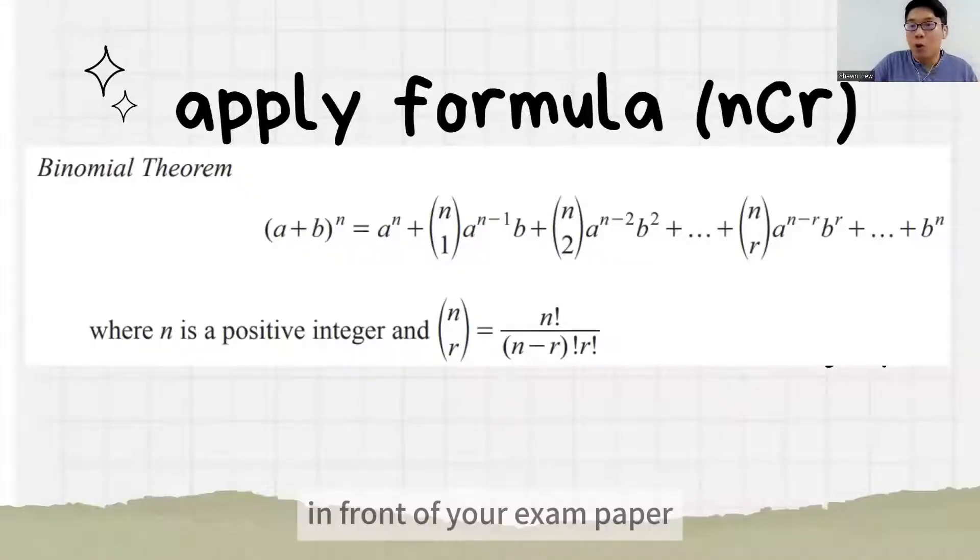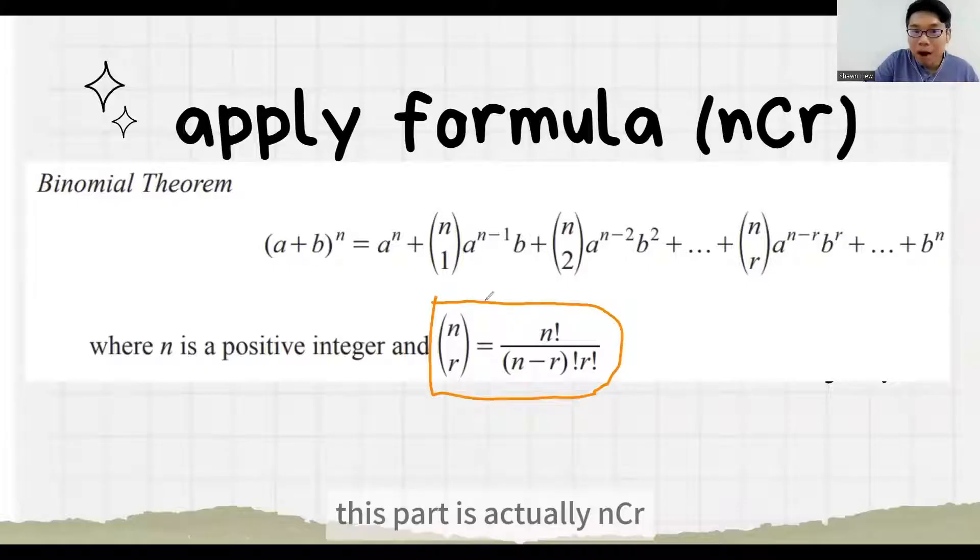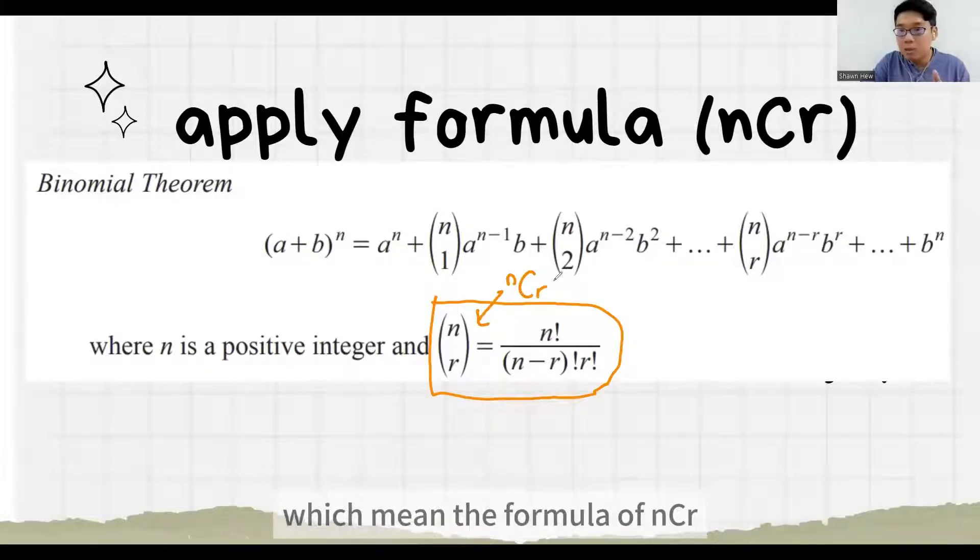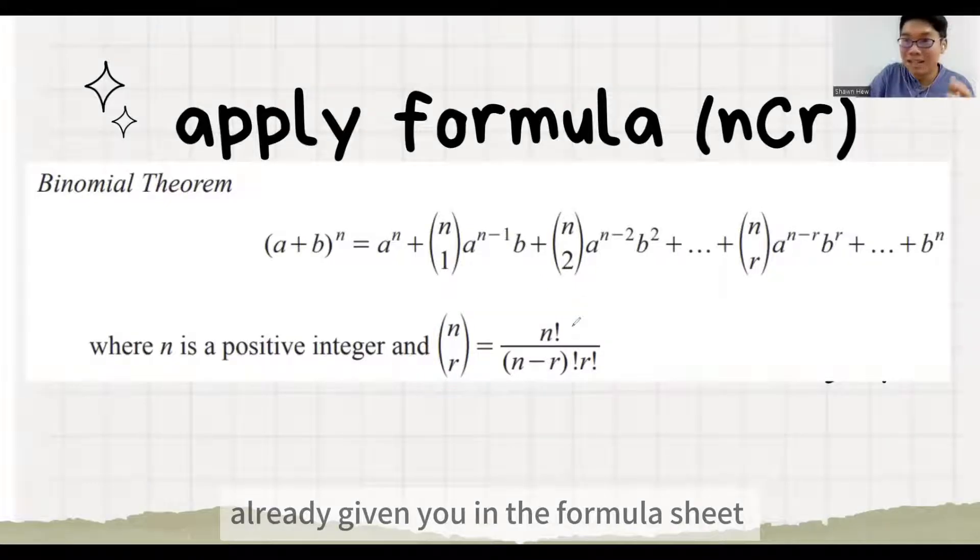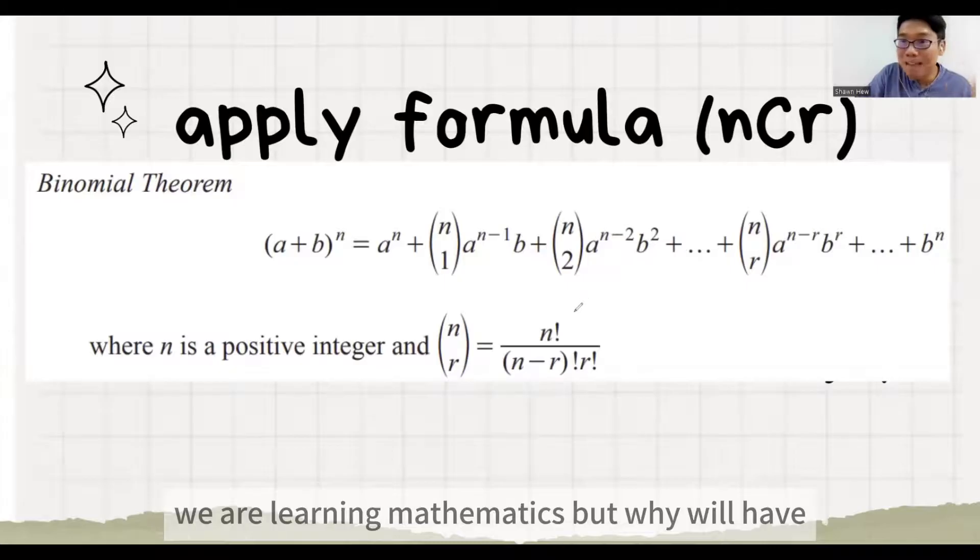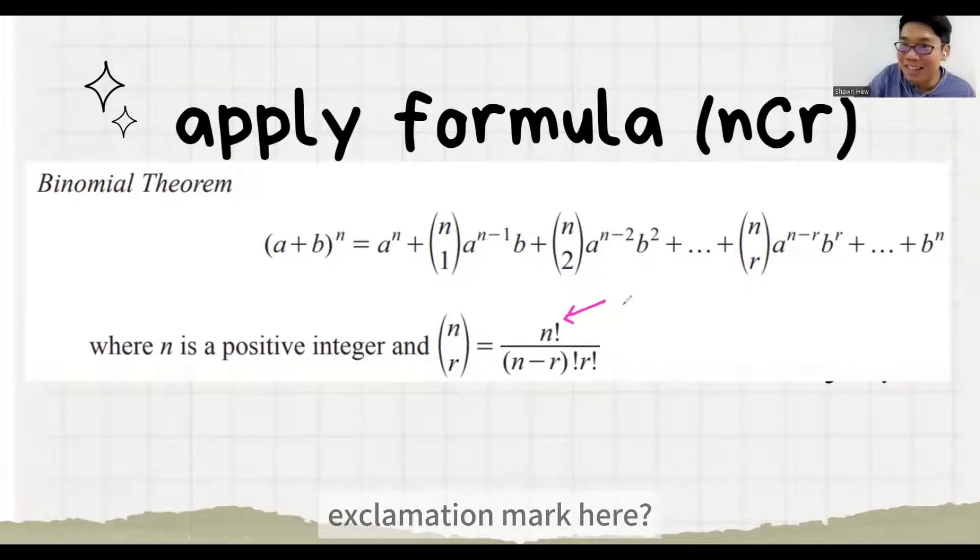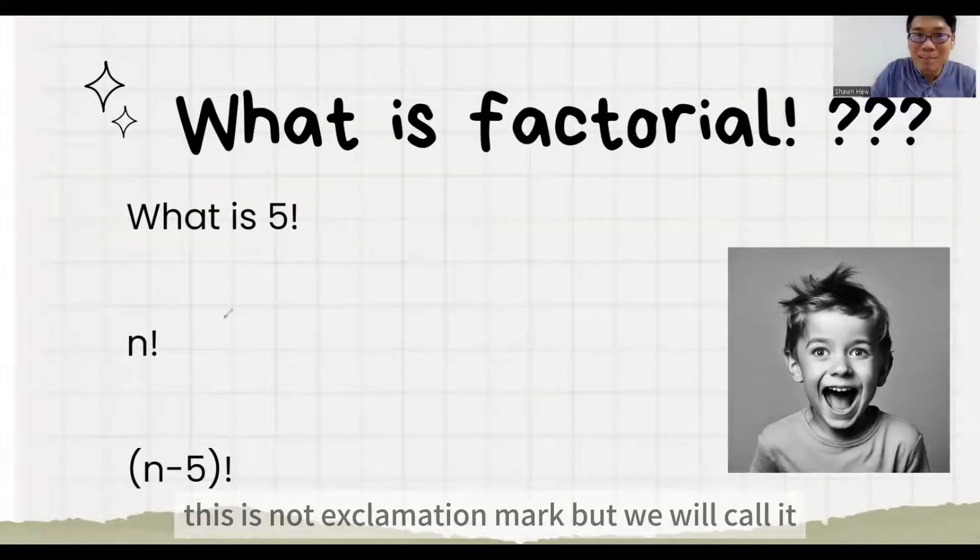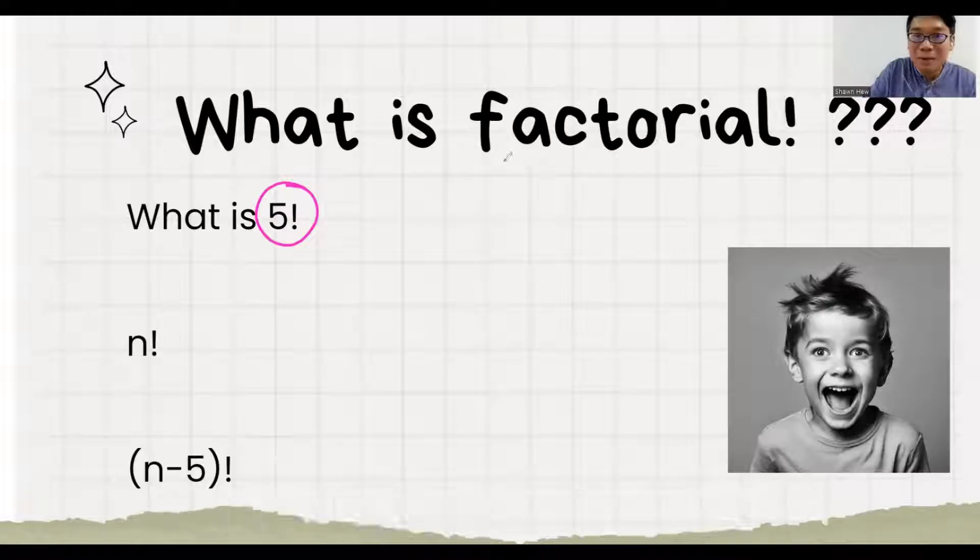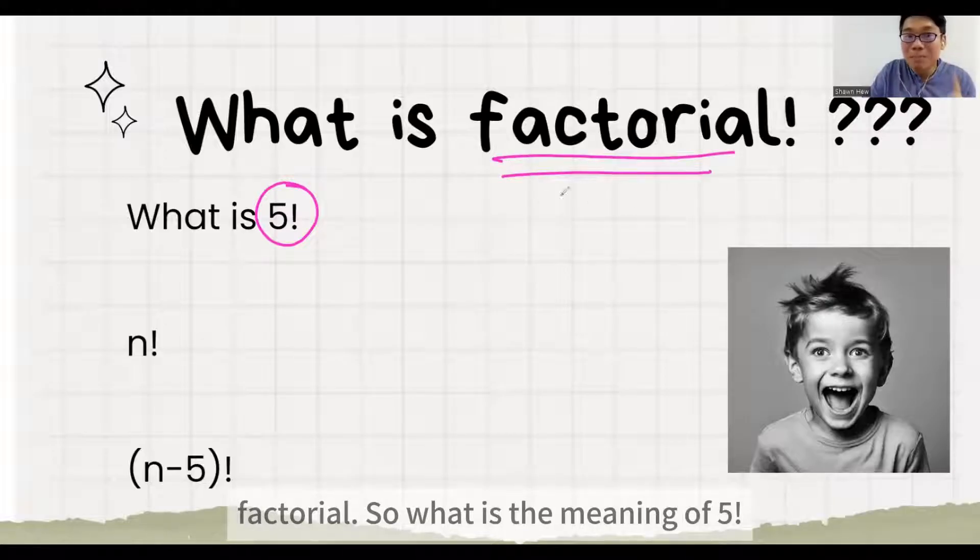In front of your exam paper, this part is actually NCR, which means the formula of NCR already given you in the formula sheet. See this formula. We are learning mathematics, but why will we have exclamation mark here? So in math, this thing is not exclamation mark, but we will call it factorial. So what is the meaning of 5 factorial? Very easy.